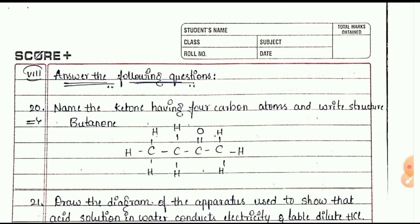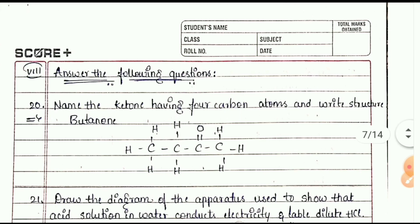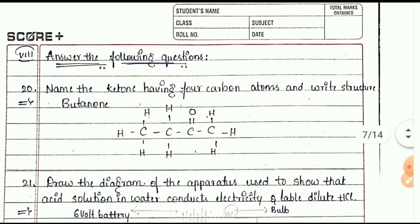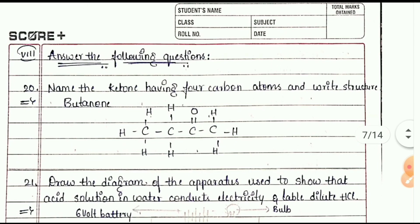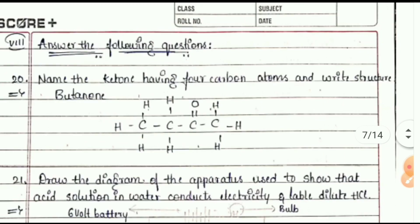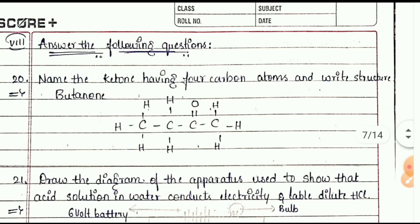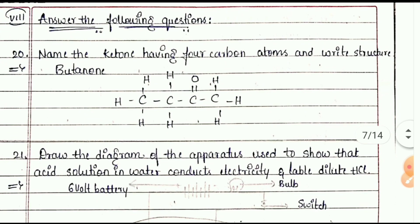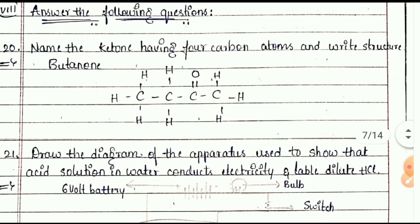Name the ketone having four carbon atoms and write its structure. A ketone with four carbon atoms is butanone — you can see the structural formula shown.